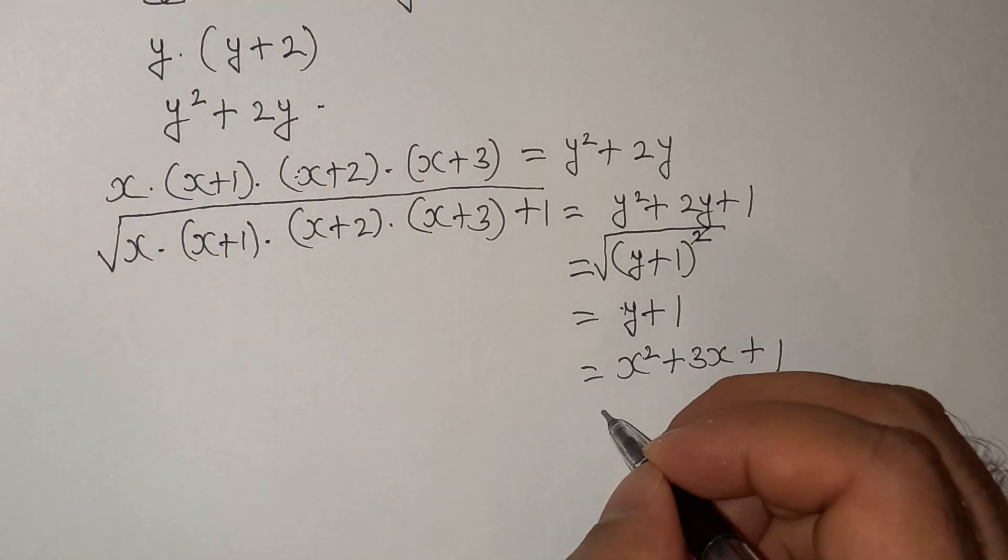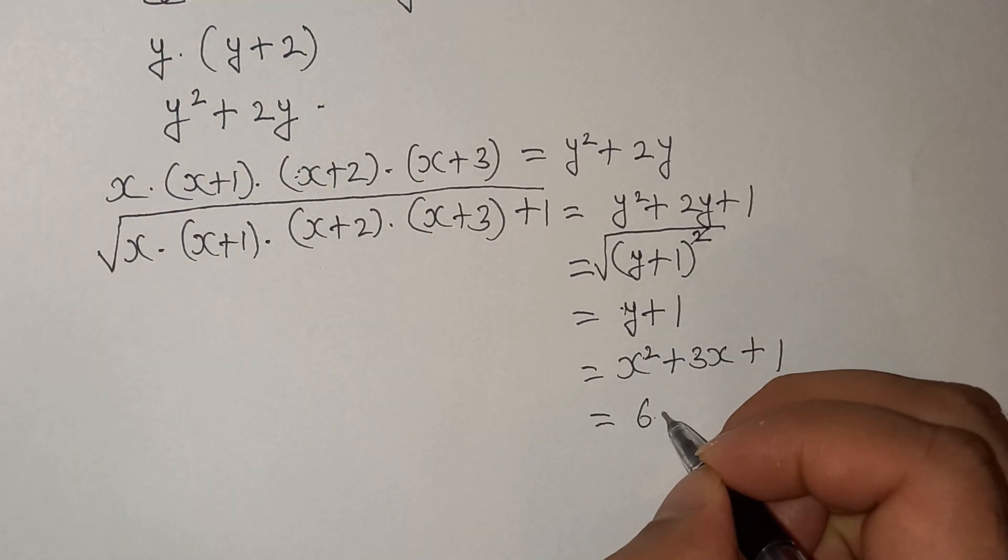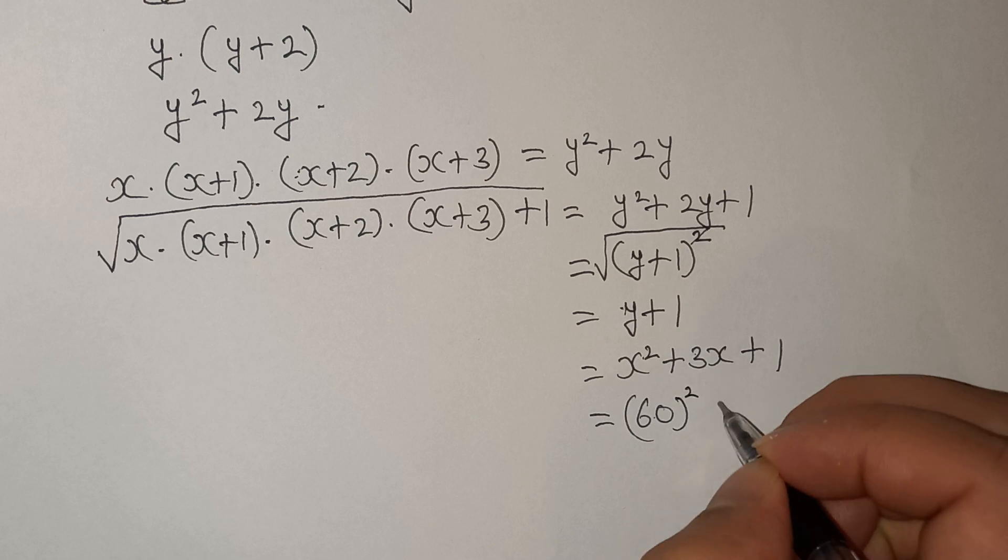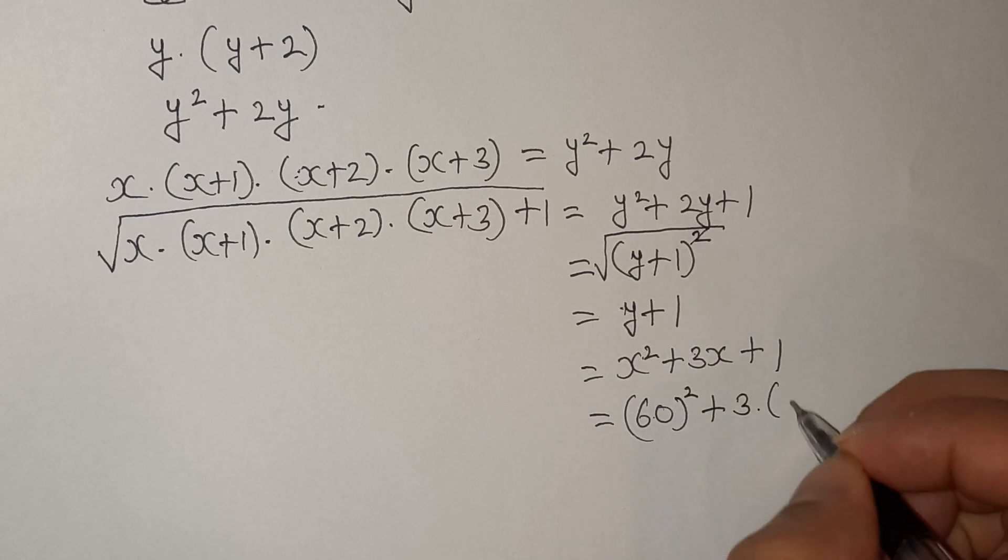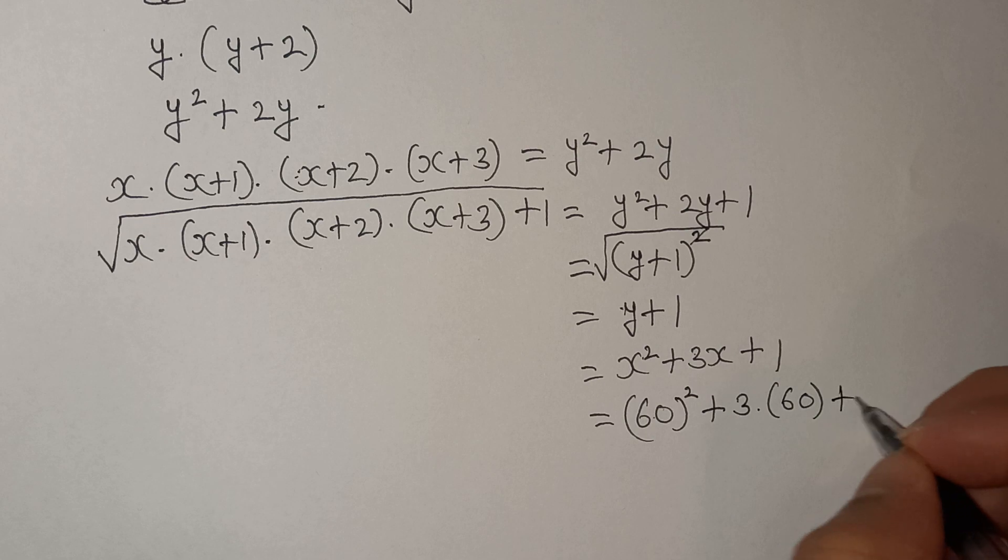So we can replace this x with 60: 60² + 3 × 60 + 1. Now this is easy to solve.